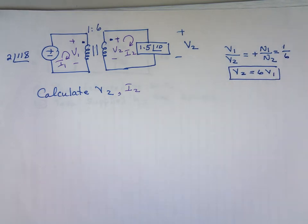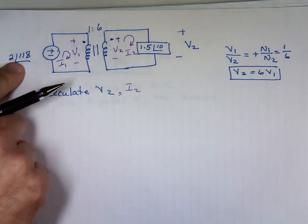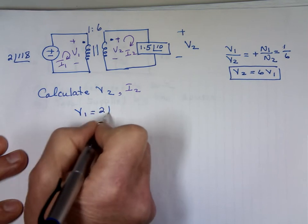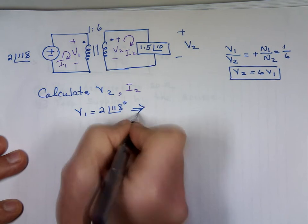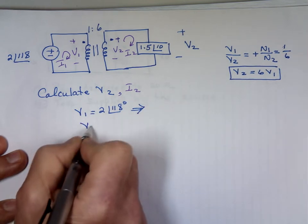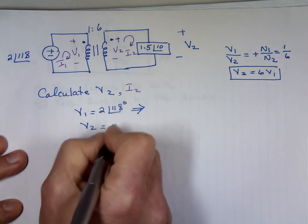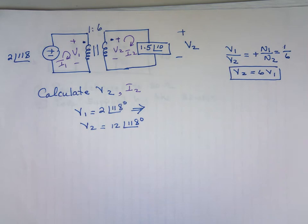The ratio which means v2 equals 6 times v1. So if I want to stop here I'm done. Why? We know what v1 is. V1 is in parallel with this source, so v1 is equal to 2 angle 118 degrees.